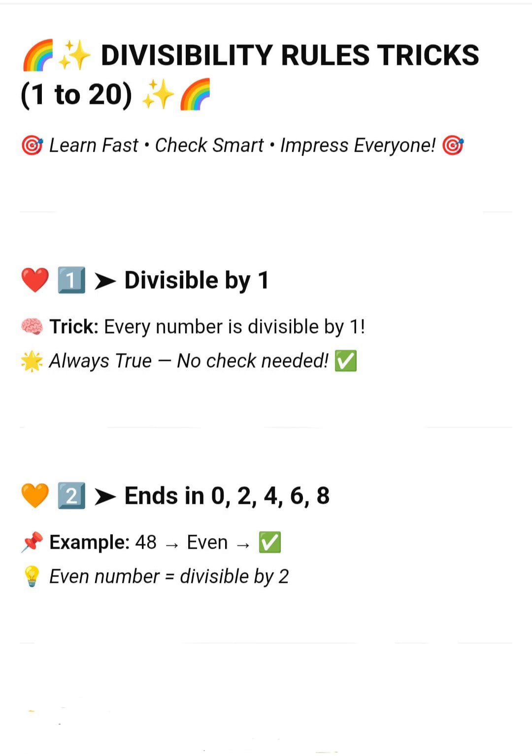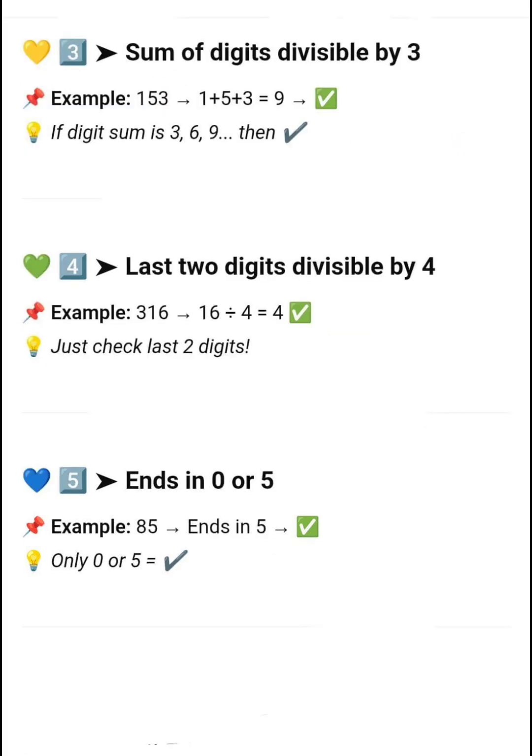First: divisible by 1 — every number is divisible by 1. Next, divisible by 2 — if the last digit is even, for example 48. Next, divisible by 3 — if the sum of digits is divisible by 3, for example 153.